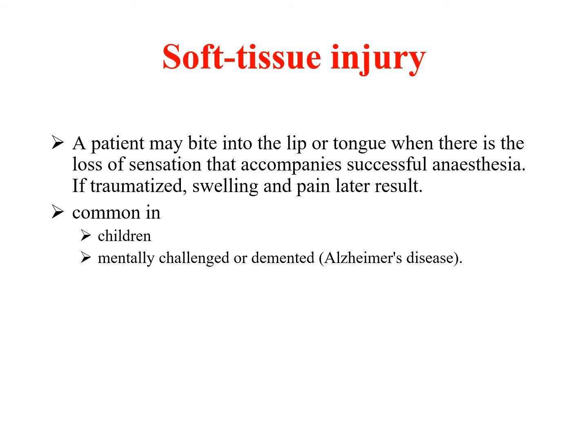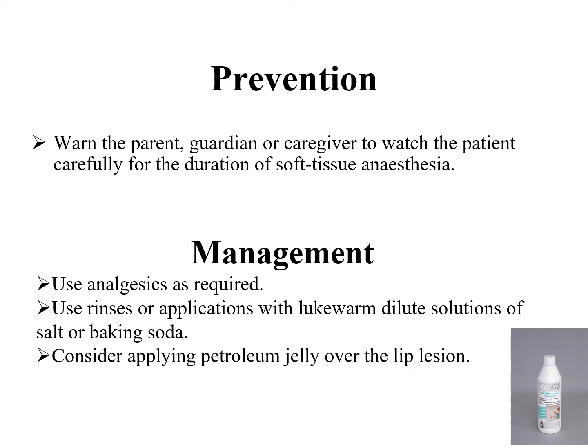Next is soft tissue injury. It happens when the patient may bite into the lower lip or tongue when there is loss of sensation following successful anesthesia — mostly seen after inferior nerve block or mental nerve block. If traumatized, swelling and pain will result. It is commonly seen in children or mentally challenged patients. Prevention: inform the parent, guardian, or caregiver to watch the patient carefully for the duration of soft tissue anesthesia. Manage with analgesics if required, warm saltwater or baking soda rinse, and apply petroleum jelly over the lip.